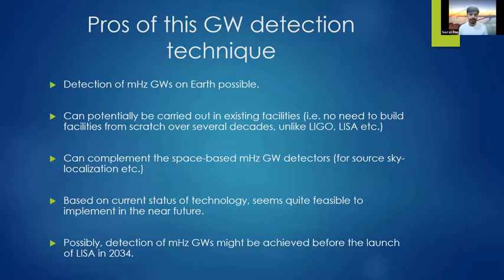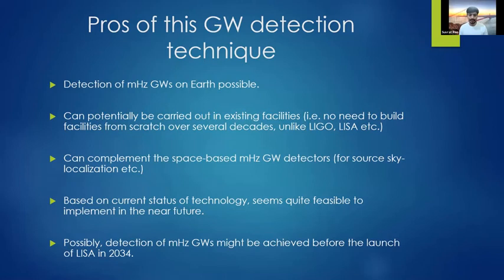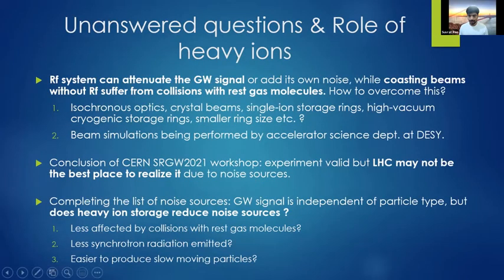To summarize the pros of this detection technique: detection of millihertz gravitational waves is possible on Earth, potentially carried out in existing facilities like the LHC without building from scratch. This can complement space-based gravitational wave detectors for sky localization. Based on the current state of technology, this does not seem unreasonable to realize in the future. There is also the possibility of detecting millihertz gravitational waves before LISA launches in 2034.